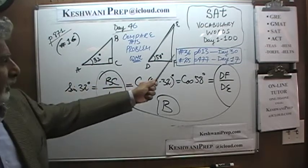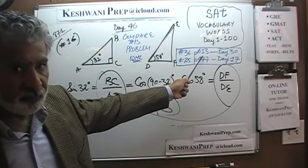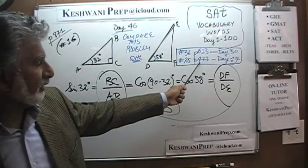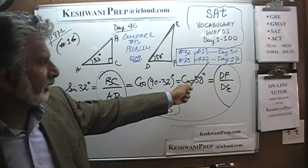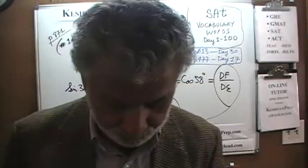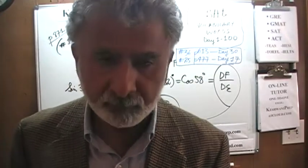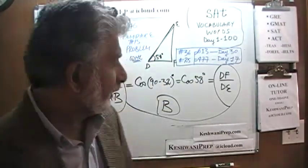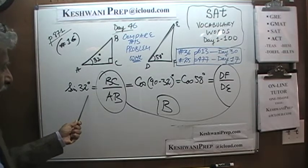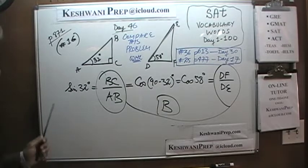I would like you to compare problem 16 on page 871 with number 36 that we did on page 613 on day 30, and number 25 on page 477 on day 17. It is a very simple concept and yet a lot of students miss these questions. Just remember: sine of x degrees has to equal cosine of 90 minus x. That's all there is.